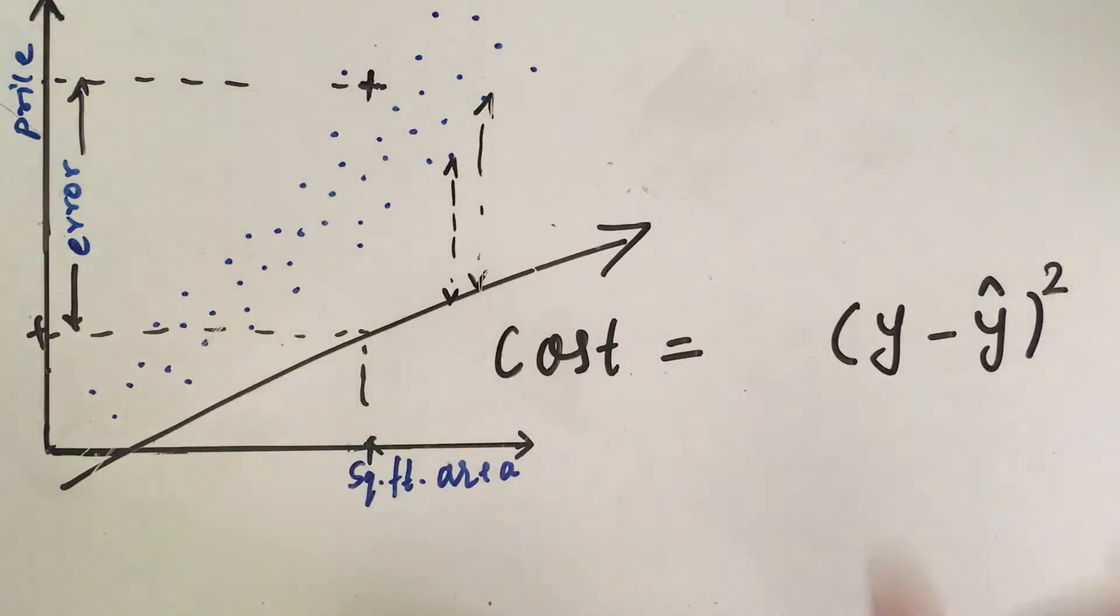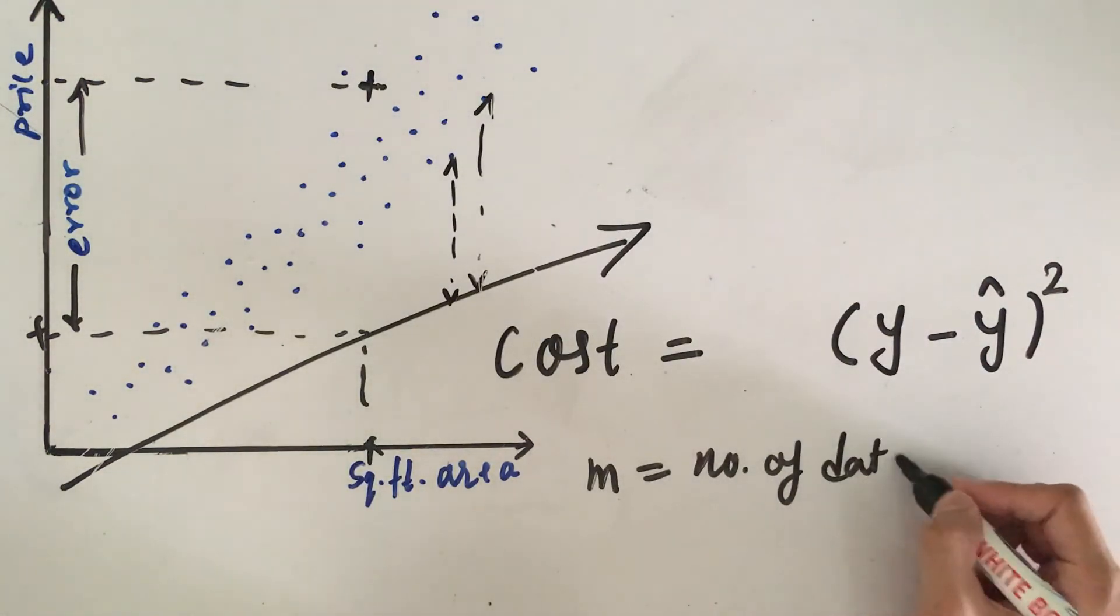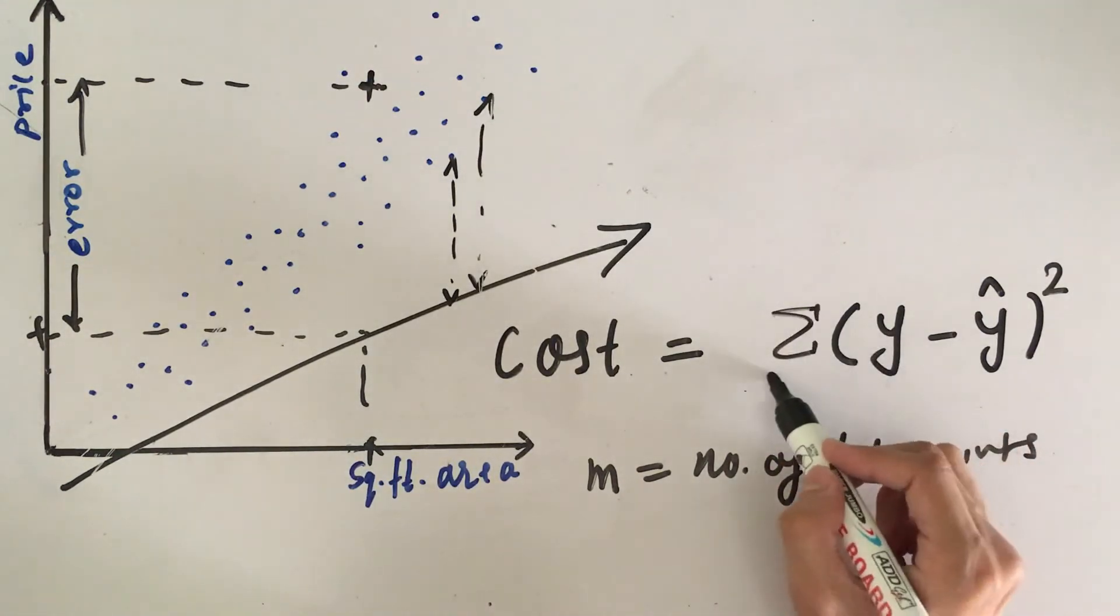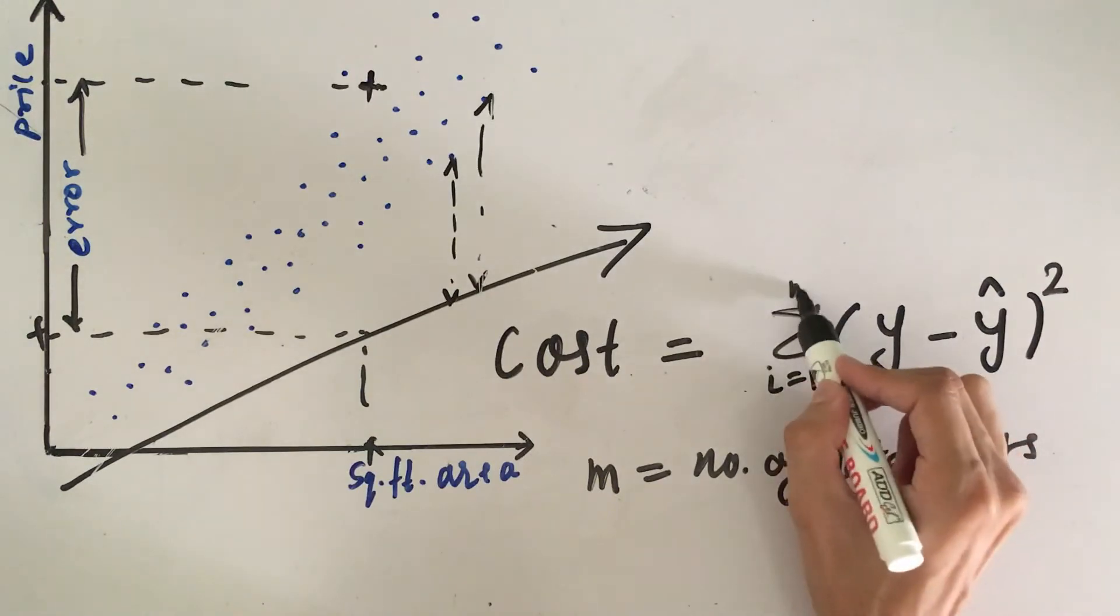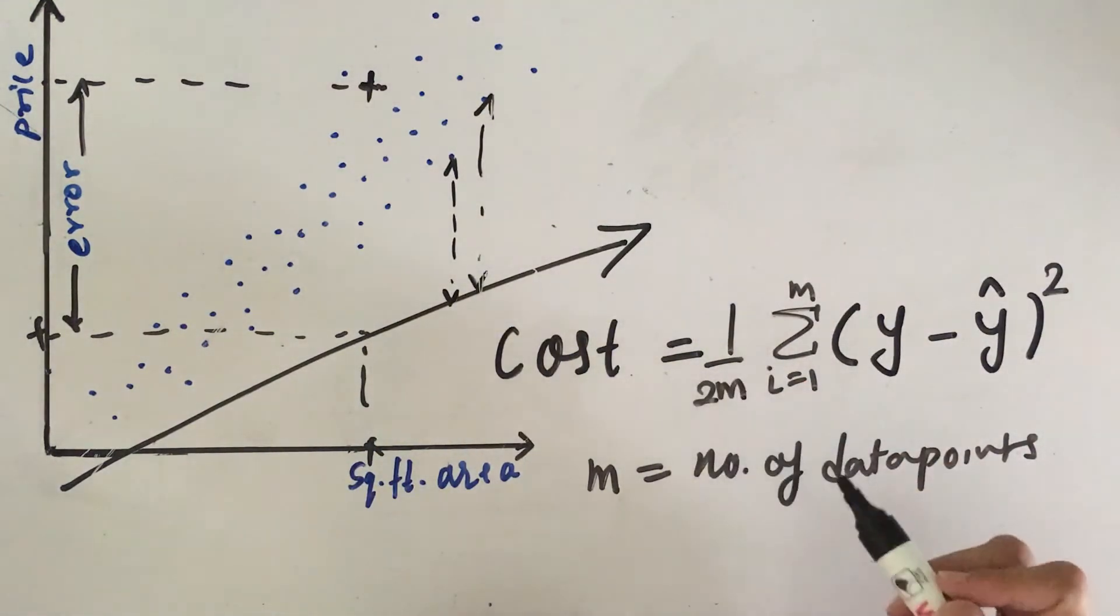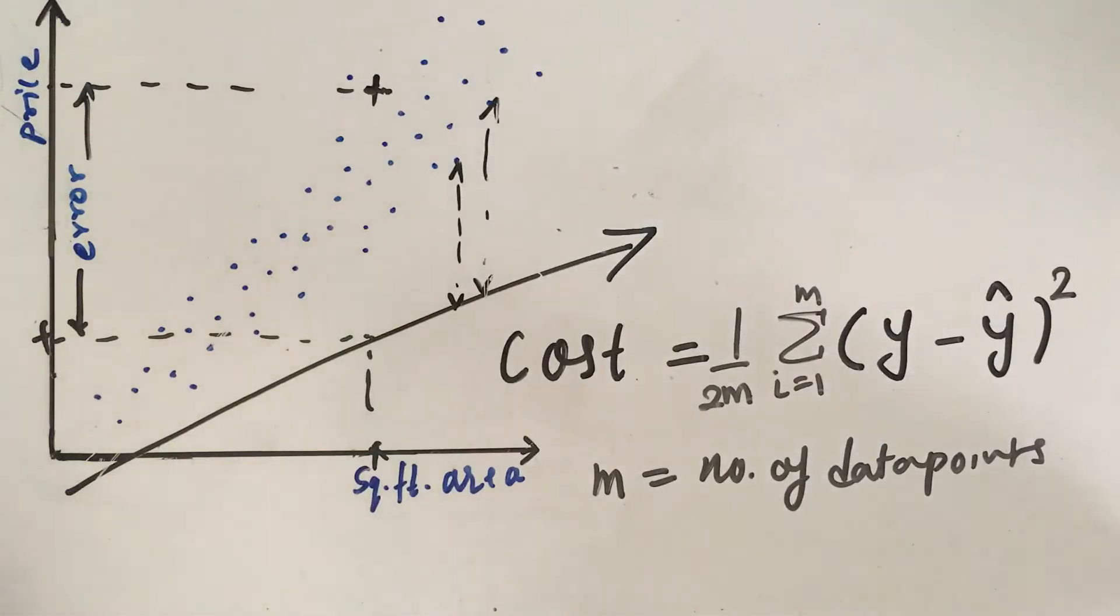Now, we have, let's say, m number of data points, m equals number of data points. Then, we will need to make the summation i equals 1 to m. As well as, I'm going to multiply this with 1 by 2m. And why am I multiplying this with 1 by 2m? It's just for averaging purpose. So, we have the formula for the cost function of linear regression as 1 by 2m multiplied by summation of square of all the errors of all the data points.